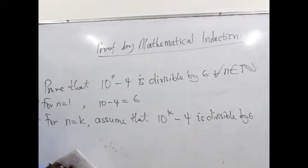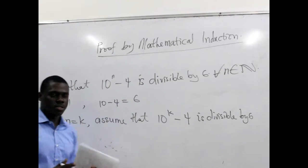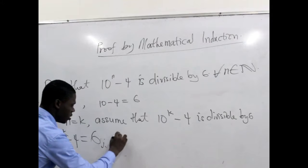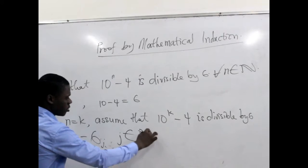At this point we can say that the equivalent statement would be that 10 to the power k minus 4 is equal to 6j, where j belongs to the set of natural numbers.